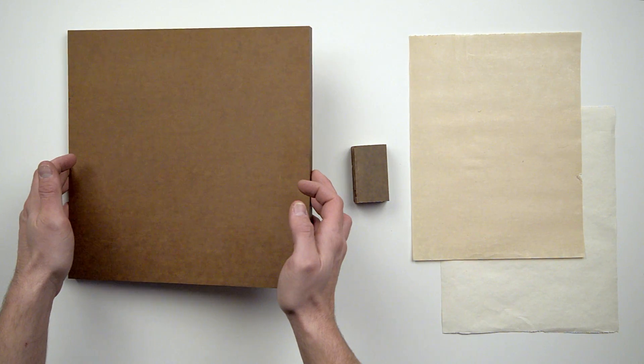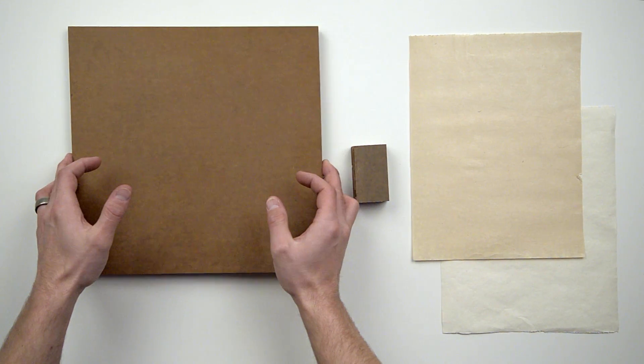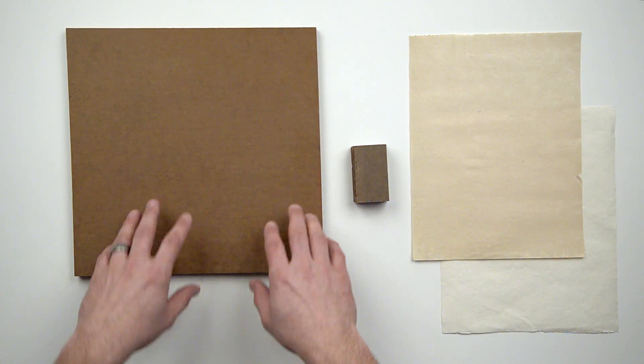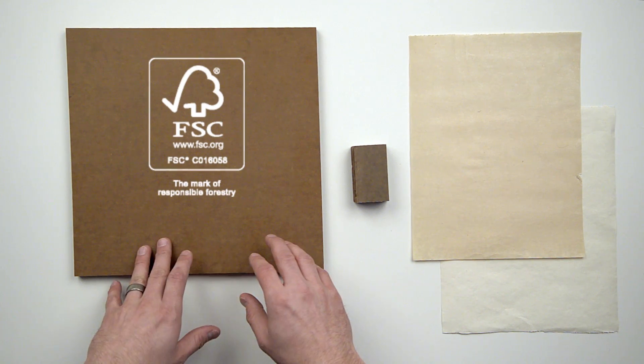This is a 12 by 12 RichLite sheet in R50. A sustainable paper-based composite, RichLite is made using Forest Stewardship Council certified paper.